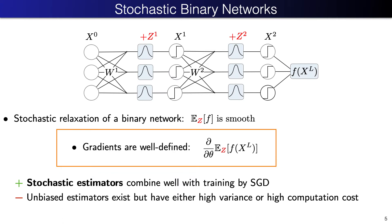One way out is to consider a stochastic relaxation of binary network. We inject noises in front of all binary activations and consider the loss function in the expectation over all these noises. Then the expected loss function becomes smooth. Its gradient is well defined. We can compute it exactly in small models or estimate it in large models. Stochastic estimates are particularly suitable because they combine well with SGD. The round-based estimators are available, but they have a prohibitively high variance or high computational cost.